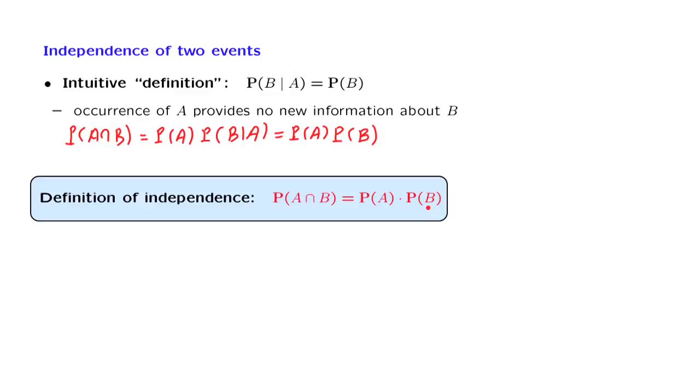Why do we use this definition rather than the original one? This formal definition has several advantages. First, it is consistent with the earlier definition. If this equality is true, then the conditional probability of event B given A, which is the ratio of this divided by that, will be equal to the probability of B. So if this relation holds, then this relation will also hold. And so this more formal definition is consistent with our earlier intuitive definition.